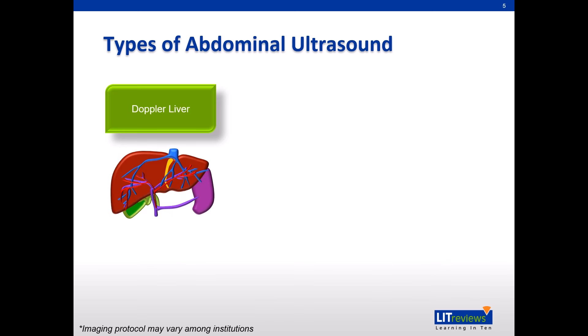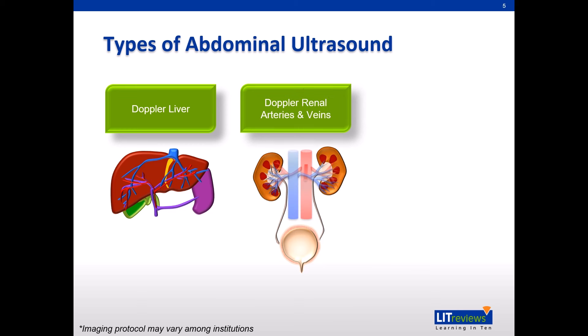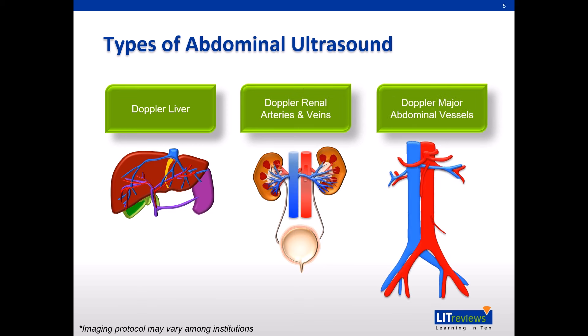Doppler ultrasound assesses the vasculature of abdominal organs, such as portal venous flow, arterial and venous flow in the liver, arterial and venous flow in the kidneys, and major vessels like the aorta and inferior vena cava, allowing one to diagnose vascular disorders such as stenosis, thrombosis, or aneurysm.